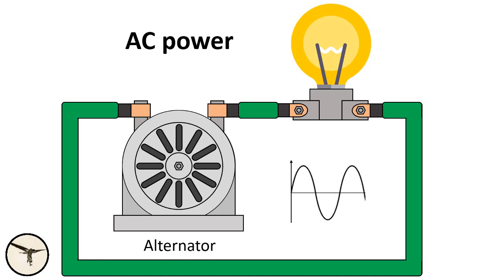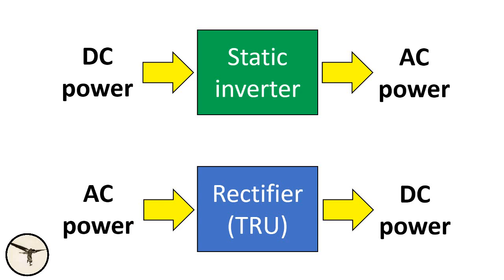AC electrical power is produced by alternators, which ATR calls AC generators. To convert DC into AC, you use an inverter, also called a static inverter. To convert AC into DC, you use a rectifier. ATR calls it a transformer rectifier unit or TRU.